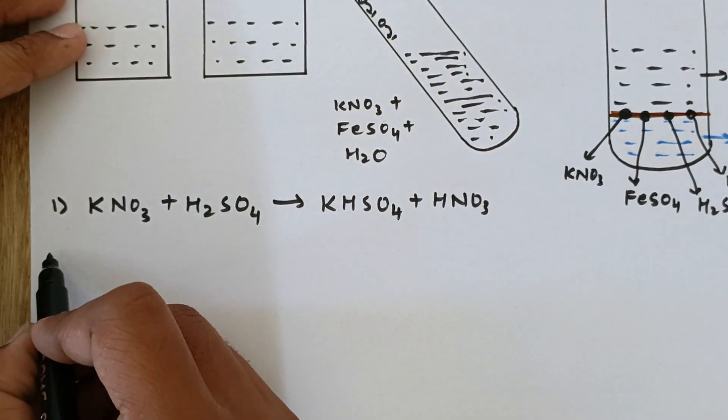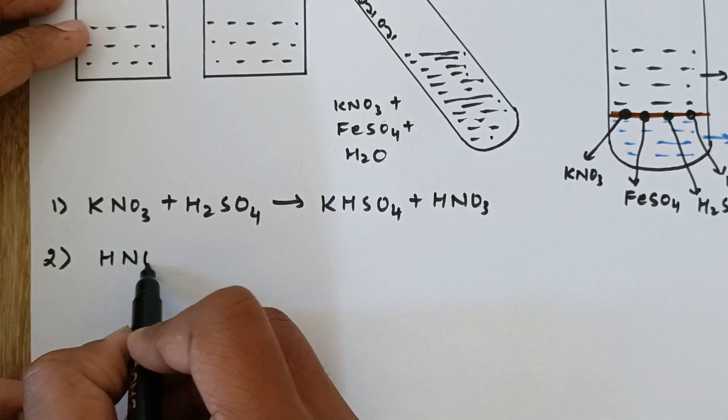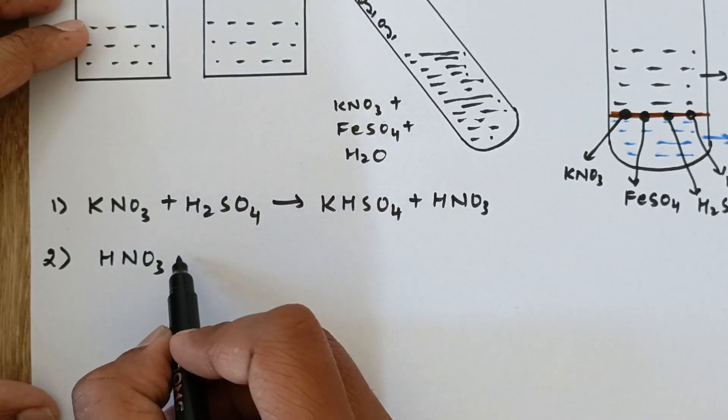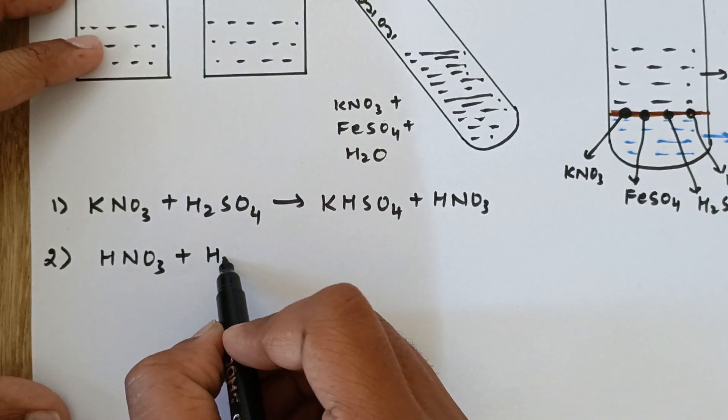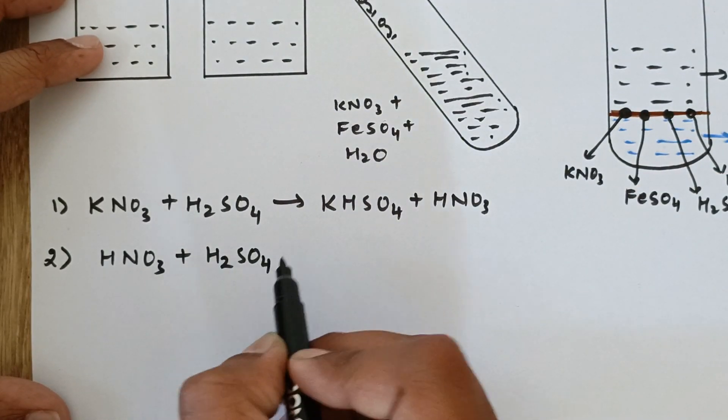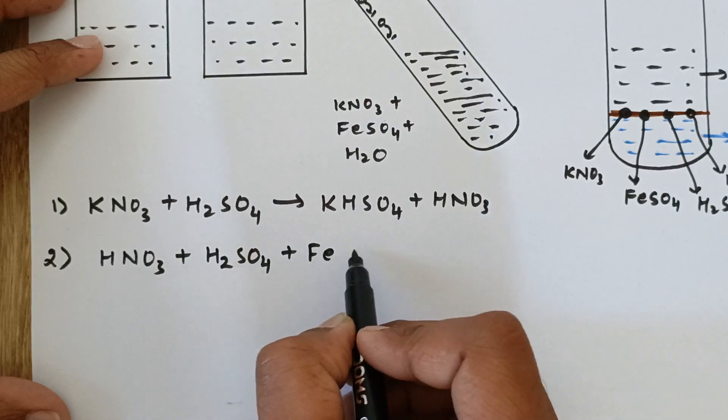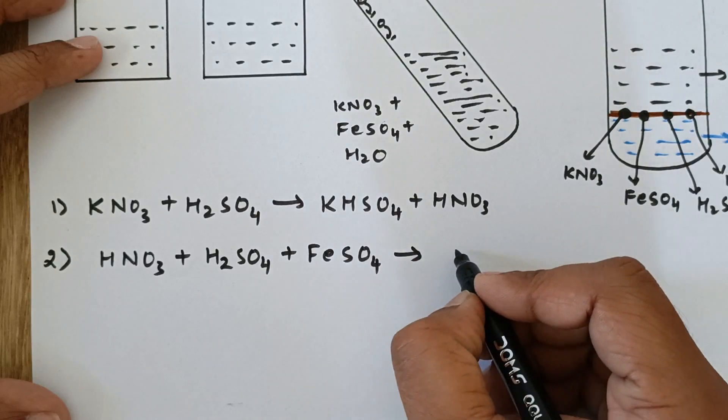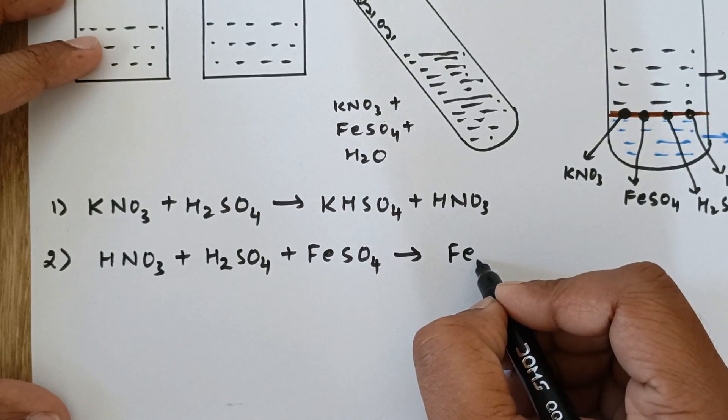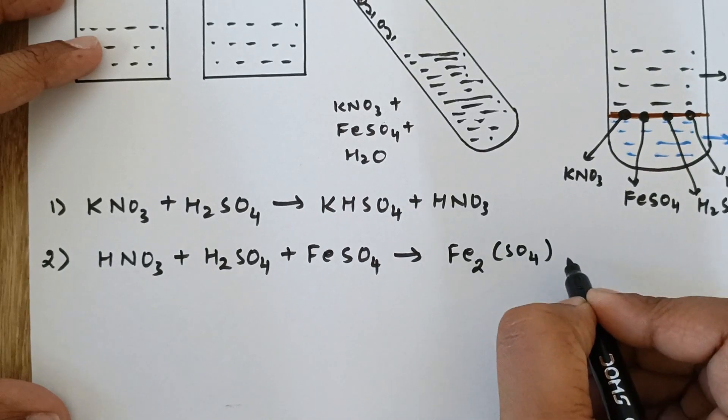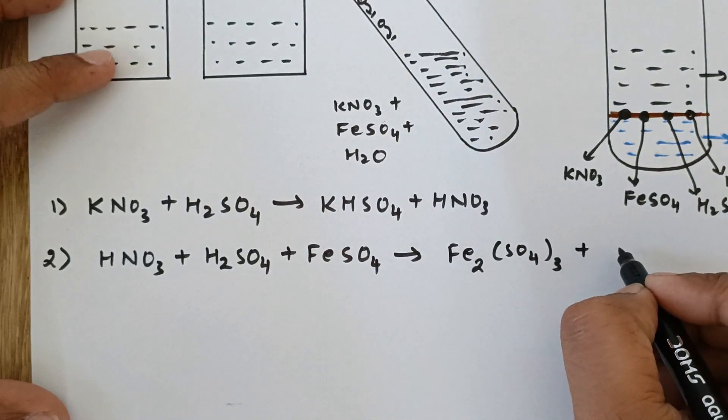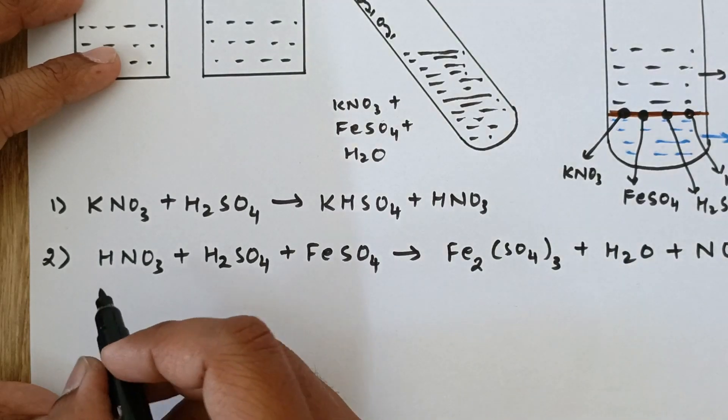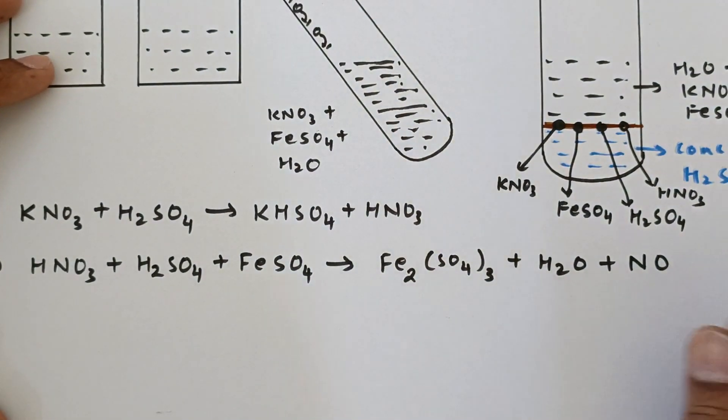So the second reaction is as under: HNO3, which is produced due to the reaction between these two, plus we also have H2SO4 molecules, plus it reacts with FeSO4, that is iron(II) sulfate. Now the reaction yields the following products: Fe2(SO4)3 plus you get water plus you get nitrous oxide, NO. Now this is not a balanced chemical reaction.